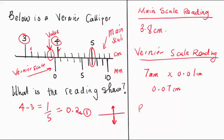So therefore the final reading is equal to 3.8 centimeters plus 0.07 centimeters. And if I'm not mistaken, I'm getting 3.87 centimeters as the reading on this Vernier caliper. That is how you get the readings from the Vernier caliper. I hope this was helpful and easier for you.